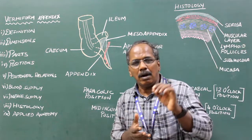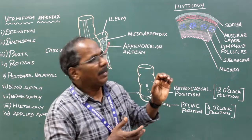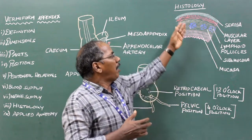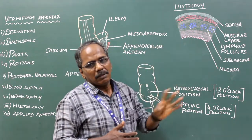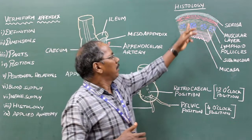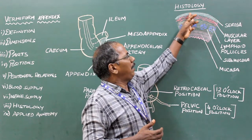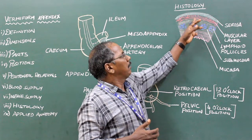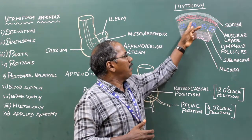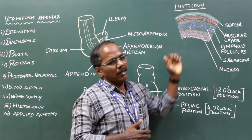Histology or structure of the appendix. The wall of the appendix consists of 4 layers: serous layer, muscular layer, submucosal layer, and mucous layer.